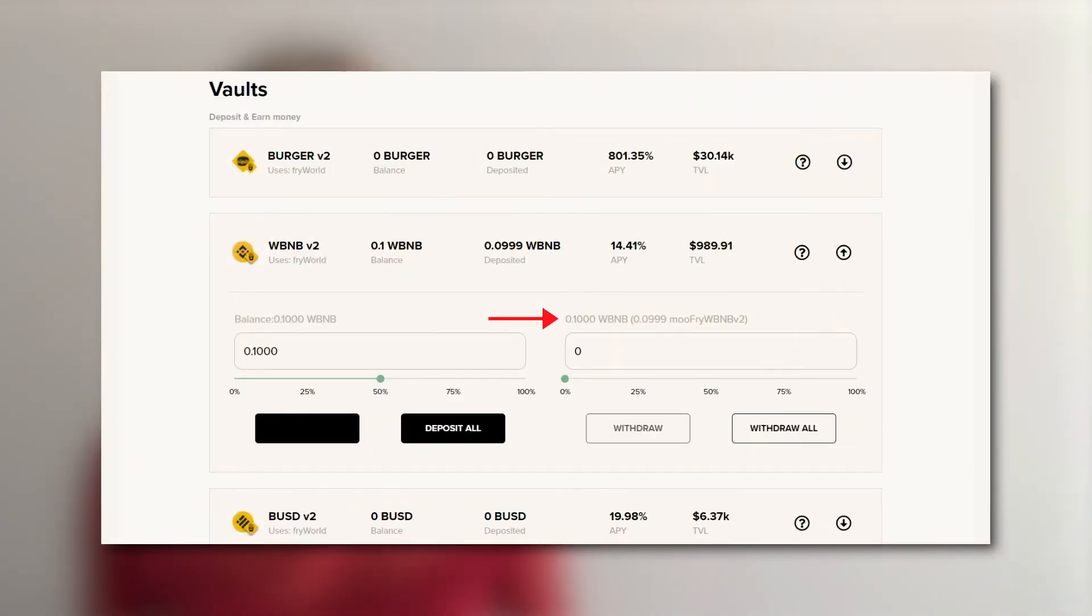Please note before you make a deposit that there is a 0.1% withdrawal fee. The longer you leave the deposit to earn returns in the vault, the more likely your return will exceed the withdrawal fee. Receive your MU token. In this case, it would be MUFRI WBNB V2.